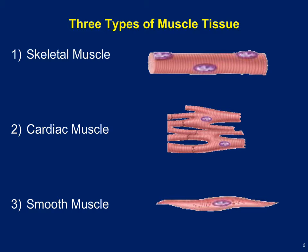There are three different types of muscle tissue: skeletal muscle, cardiac muscle, and smooth muscle. We're going to talk briefly about the properties of all three of these, and then spend the rest of the time today talking mainly about skeletal muscle.